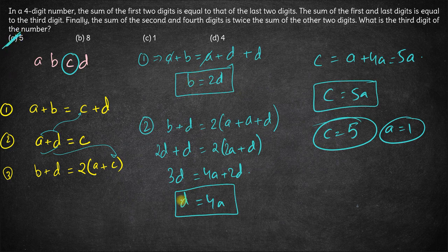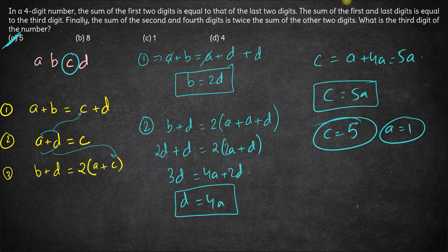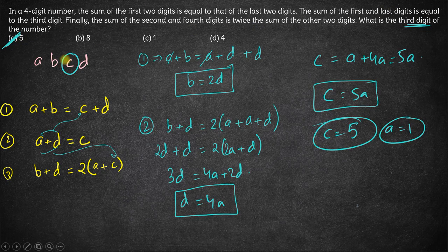We can also calculate B and D from these two, but we are only concerned with the third digit in the question. Hence option A is the right answer. Thank you.